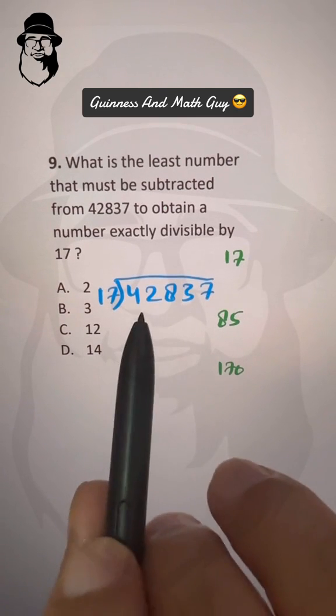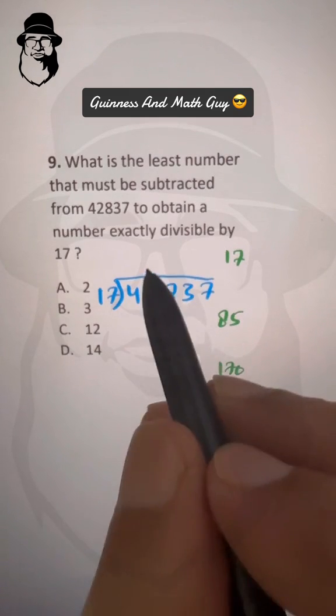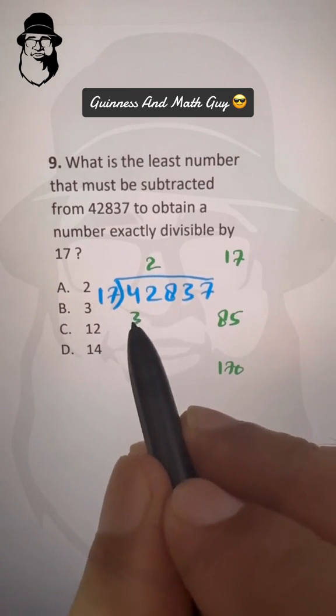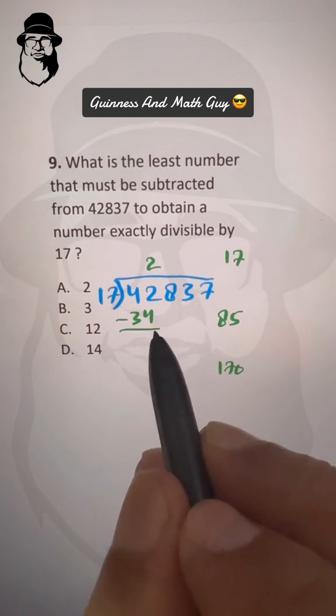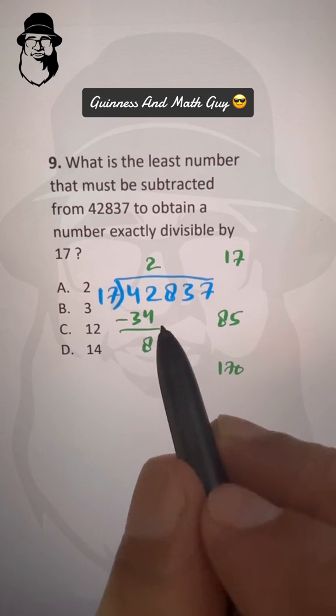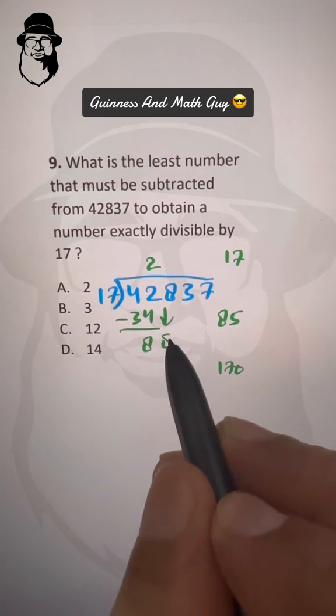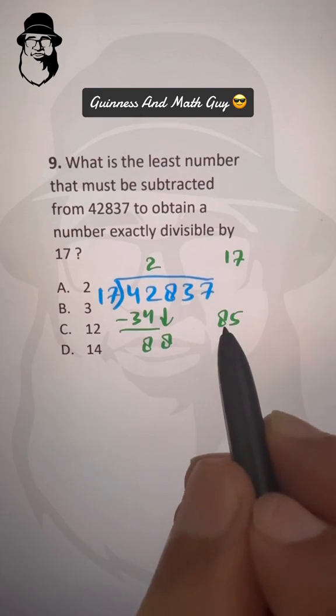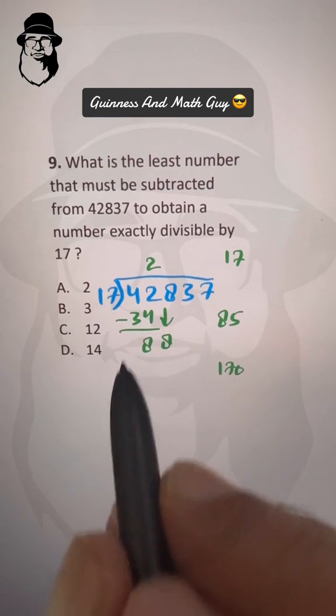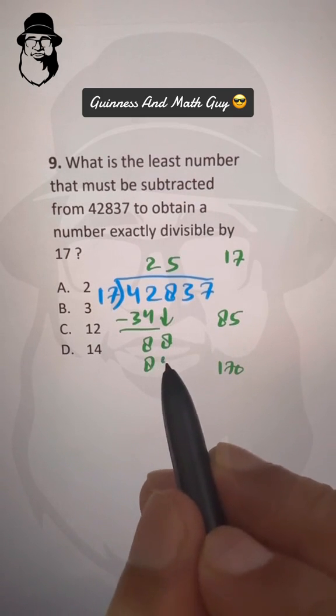So we have 42 here, so 17 times 2 is 34. We subtract from this, so we have 8. Then we bring down this 8, and we can see 85 is close, so 17 times 5 is 85.